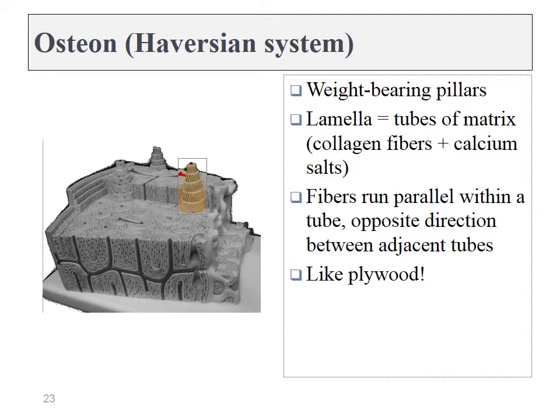Each osteon is a repeating unit composed of multiple layers of bone tissue, with collagen fibers within these layers. Within every layer, the collagen fibers run parallel, but in the next layer they run in the opposite direction — alternating back and forth, similar to the way that grains in plywood alternate. This makes the osteon much stronger, as it does not have a weak spot where things could easily be sliced in half.